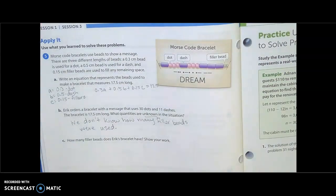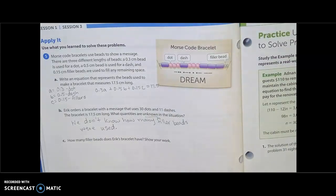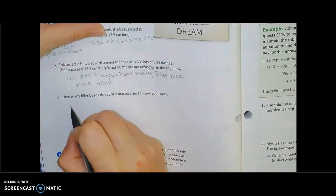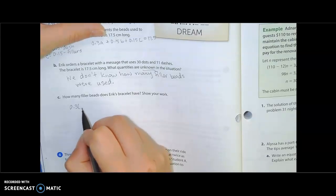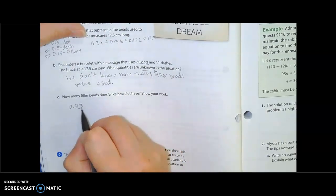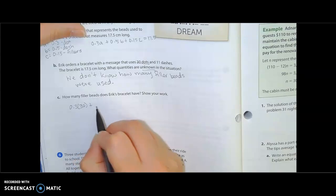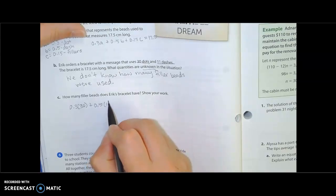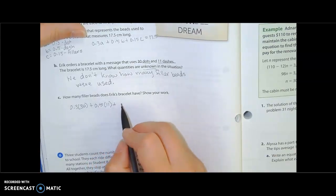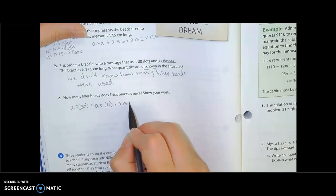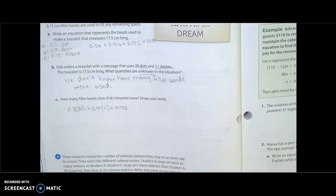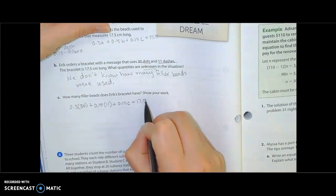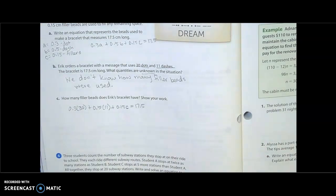Part C: How many filler beads does Eric's bracelet have? Show your work. So this is us solving the equation. We know A, so we have 0.3A is going to be 30. And then we have 0.5 dashes, that's going to be the 11 dashes. So times 11 plus the 0.15C because we don't know filler or whatever you called your filler. And then it has to equal 17.5 centimeters.